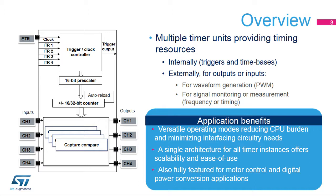The basic timers TIM6 and TIM7 are best suited for such a task, as they are the simplest timer derivatives with no input-output channel. It is also possible to generate internal timings using any other timer, using compare events, or using the trigger outputs. It is possible to generate multiple timing events with a single timer using multiple compare channels.